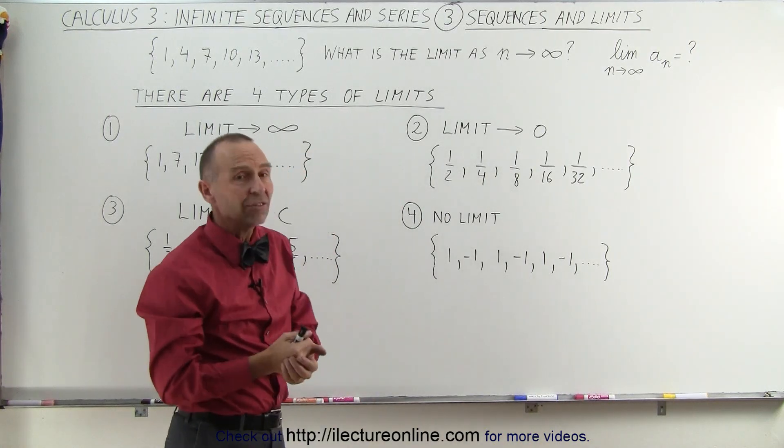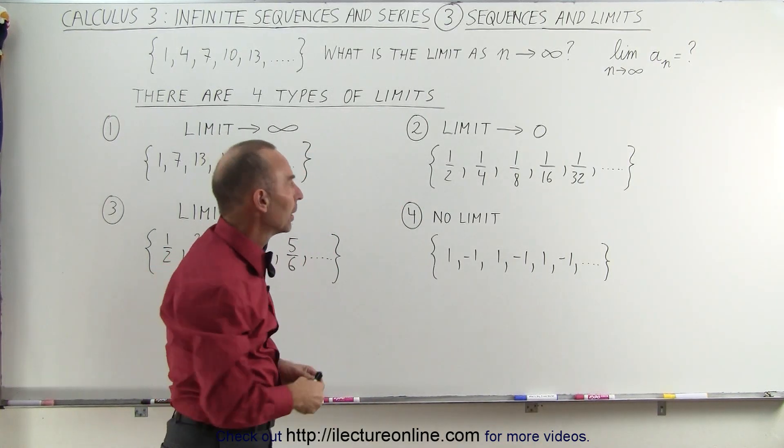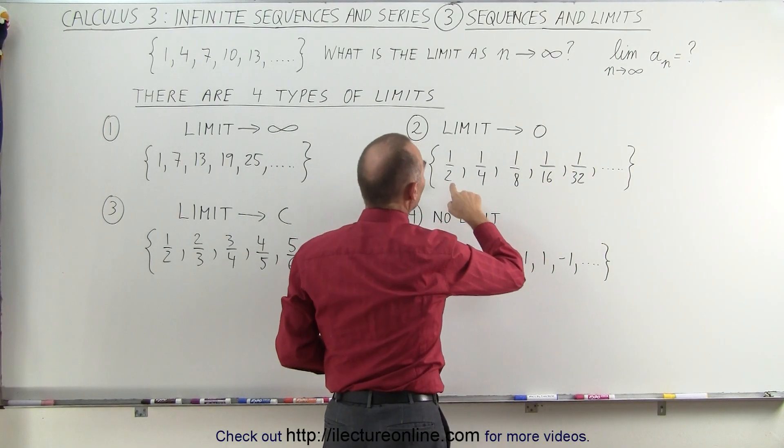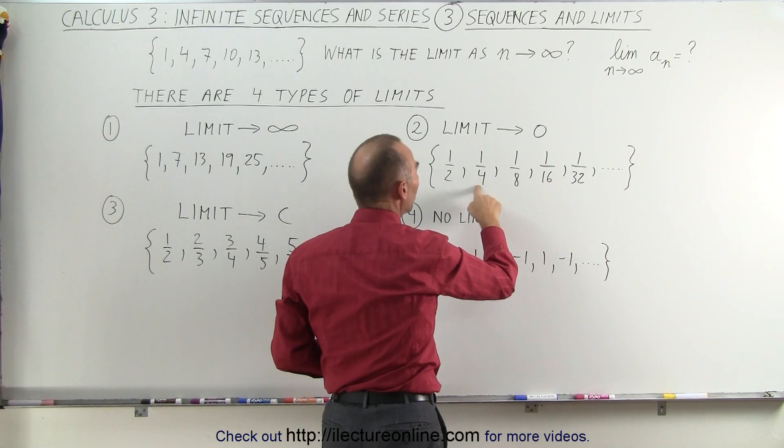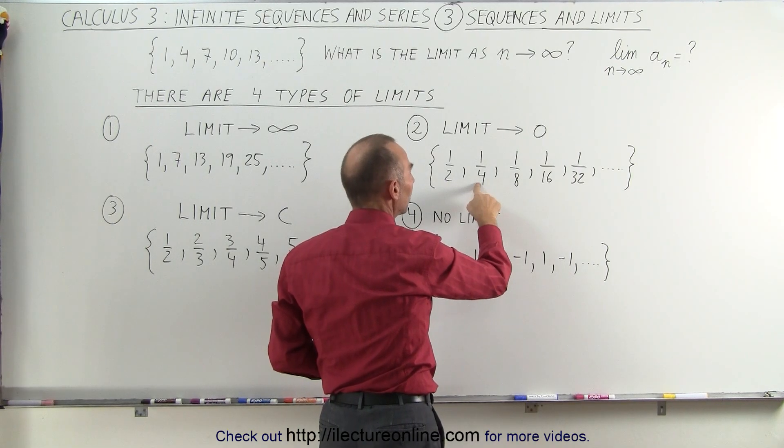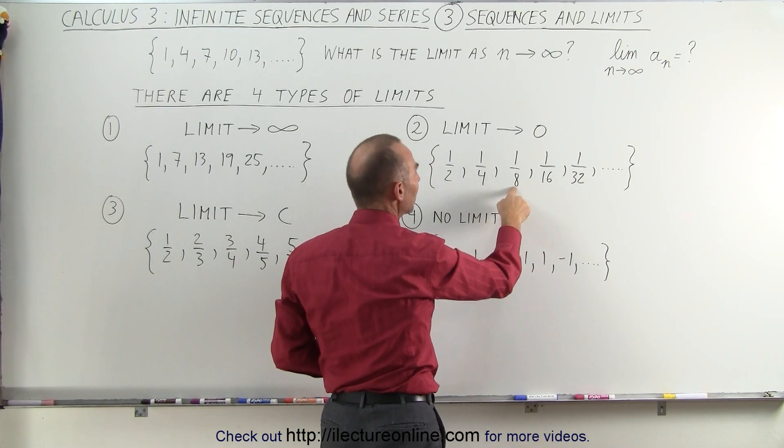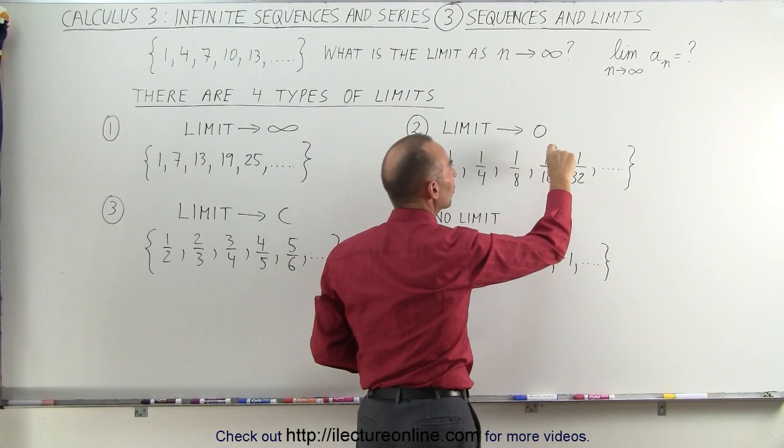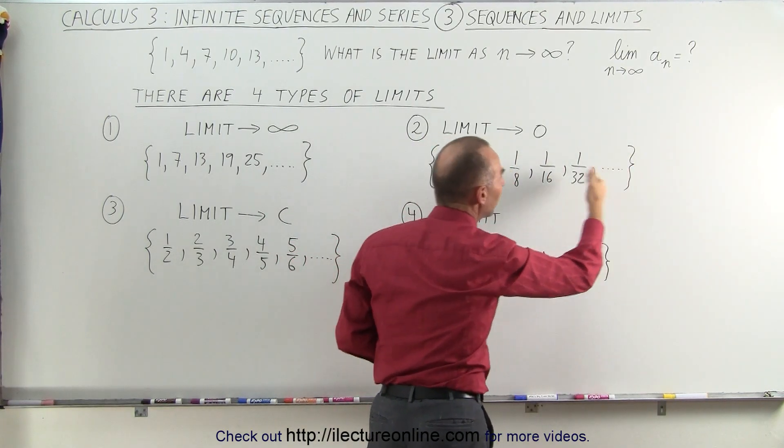But in some cases, the limit goes down to zero. The limit goes down to zero if, for example, the numerator stays as a constant value and the denominator is double what it was before. So this one is four instead of two, this one is eight instead of four, and so forth. You can see that the number in the sequence gets smaller and smaller and smaller.